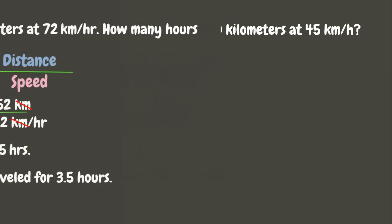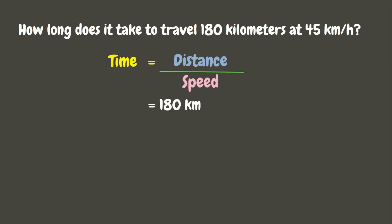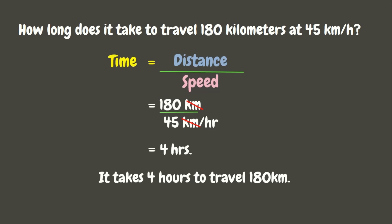Now, let's go to our last example. How long does it take to travel 180 kilometers at 45 kilometers per hour? This time, we need to solve for the time. Again, to solve for the time, we just simply need to divide distance by the speed. Here, the distance is 180 kilometers, while the speed is 45 kilometers per hour. Now, let us solve: 180 divided by 45 is 4. Now, let us cancel the kilometers, and our unit would be hours. This means that it takes 4 hours to travel 180 kilometers.